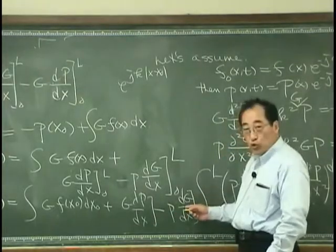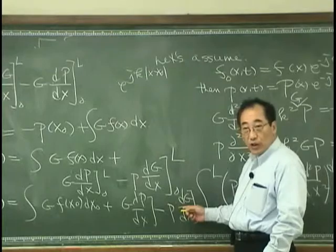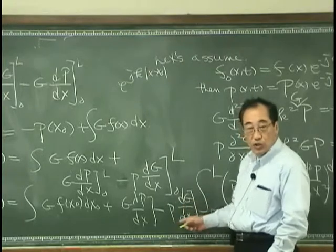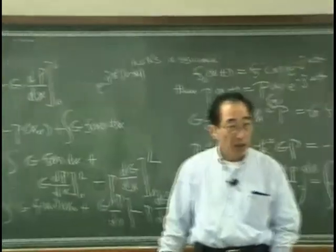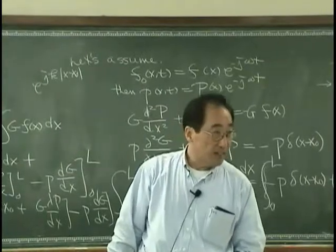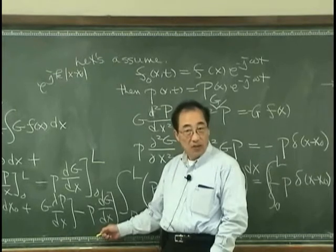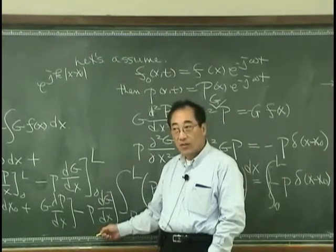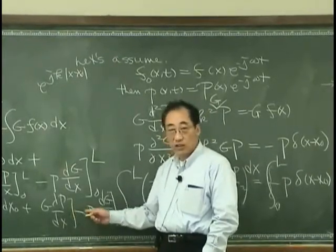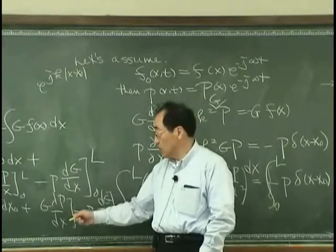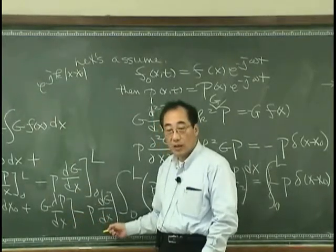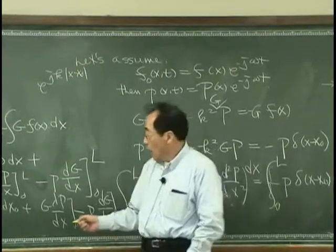Or, I can select G, that has a zero value at X equal zero, DG DX has a zero value at X equal zero and L, and I can remove this. So, depending on the selection of G, I can either remove this or remove that.